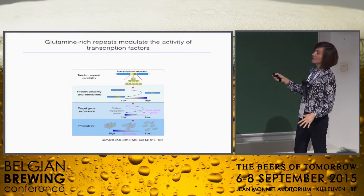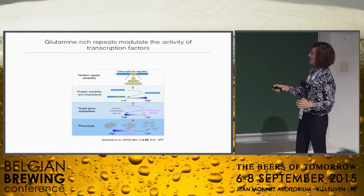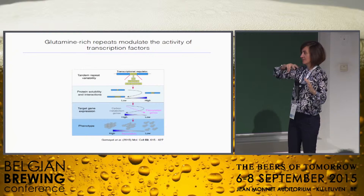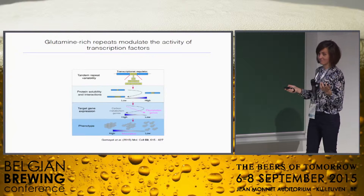The downstream effect — since these are mostly regulators — is seen in the targets of the gene and how their levels change. For the phenotype, it's not an on-off switch; it's more of a spectrum. We go from very flocculent cells to somewhat flocculent cells to almost free cells.